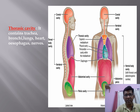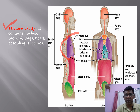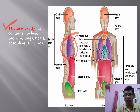The thoracic cavity remains in the thorax — the chest — and contains the trachea, bronchi, lungs, heart, esophagus, and nerves. Looking from the front, these structures make up the thoracic cavity.